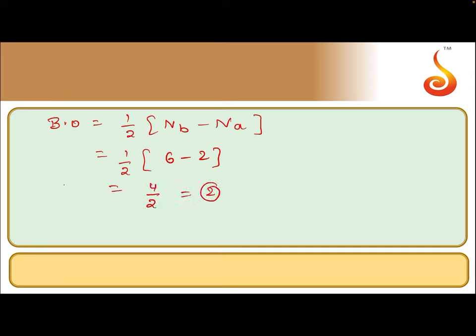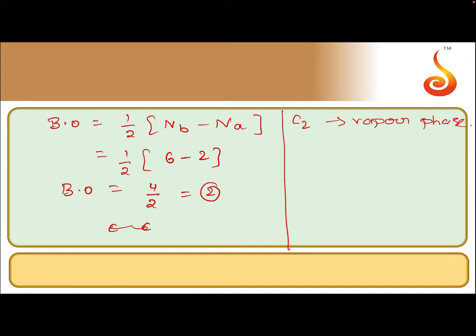So, bond order is 2, meaning in between the 2 carbon atoms there should be 2 bonds — a double bond. Bond order 2. C2 molecule exists only in vapor phase.